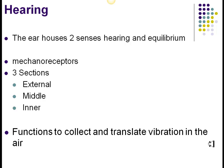Senses is all about ultimately turning on a nerve. Equilibrium works basically the same way — it is a mechanoreceptor as well. Your ear has three portions: the external, middle, and internal. The external is the auricle that you see and the ear canal. The middle ear contains the famous little bones — the malleus, incus, and stapes — and the inner ear contains the cochlea, which looks a little bit like a snail. The main function is to collect and translate vibrations in air, with the brain ultimately doing the translation.